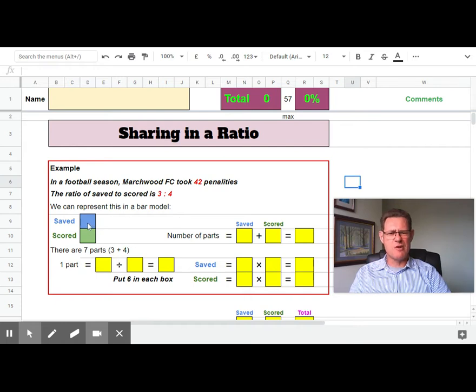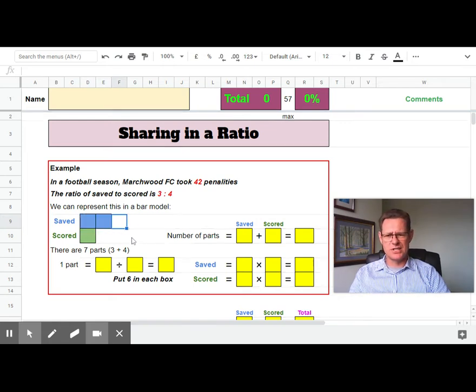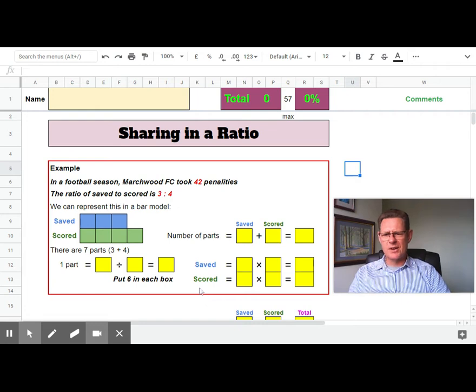To represent this in the bar model, saved means there are three parts, so we can put three parts here in blue. Since it says 3 to 4, the scored is going to represent four parts. So there's our bar model ready to fill in.